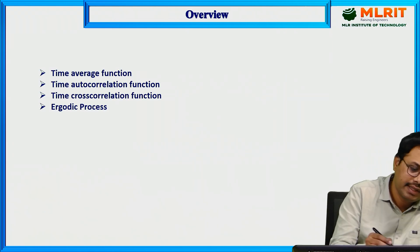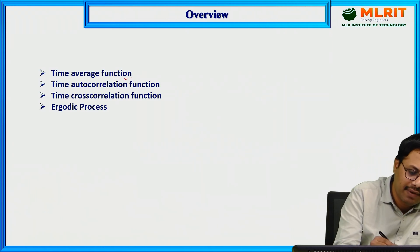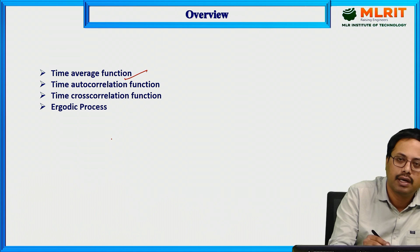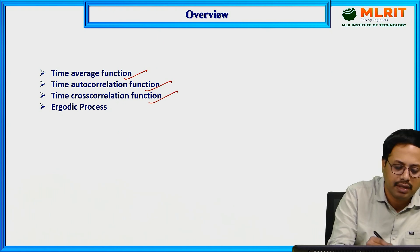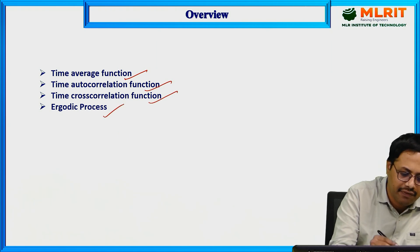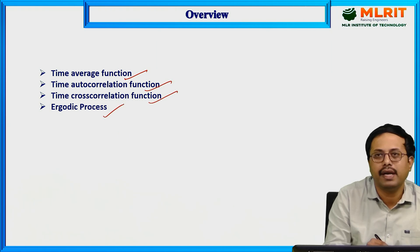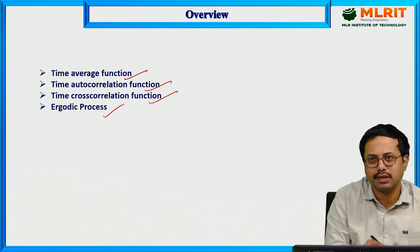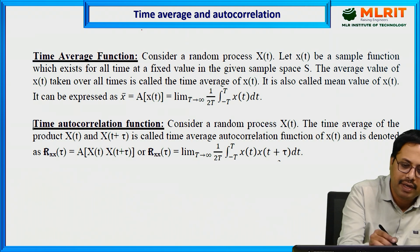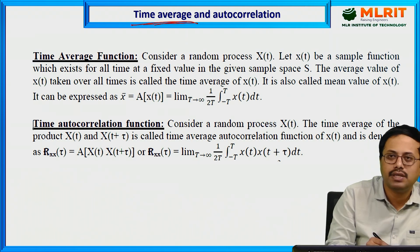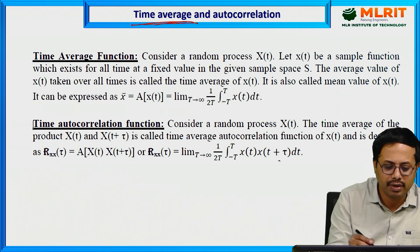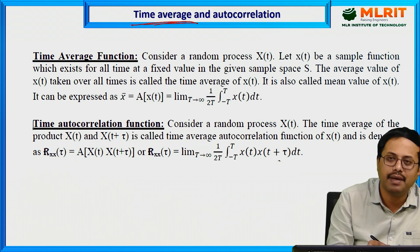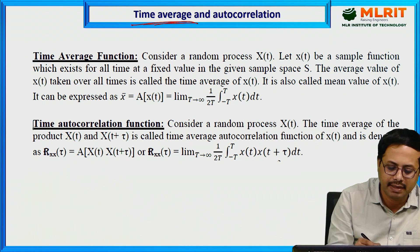The overview covers: time average function, time autocorrelation function, time cross-correlation function, and the definition of ergodic process. You need to know the difference between time average and ensemble average.